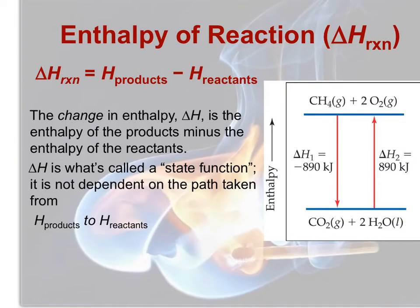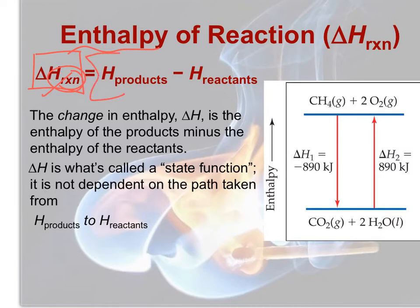Most of the work we'll be doing with enthalpy has to do with solving for the enthalpy change that occurs in a reaction. The abbreviation we use for reaction is Rxn, and the enthalpy change — or the heat change during a reaction — is equal to the sum of the enthalpy of the products minus the sum of the enthalpy of the reactants. So it's products minus reactants.